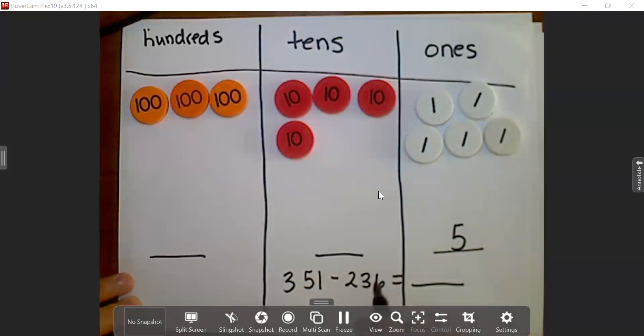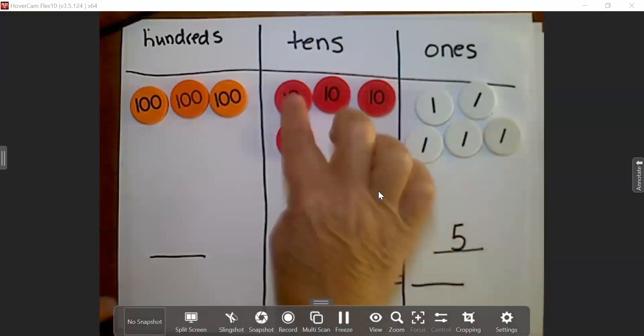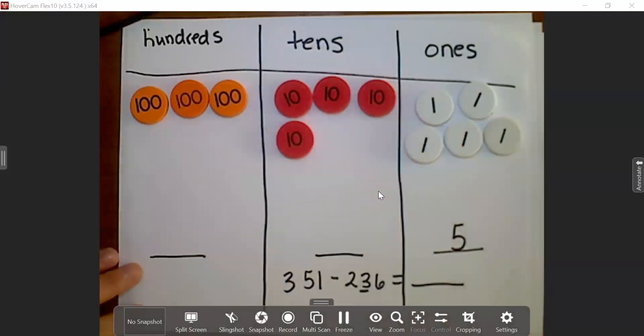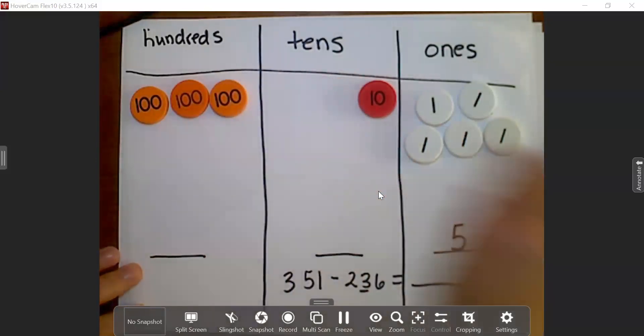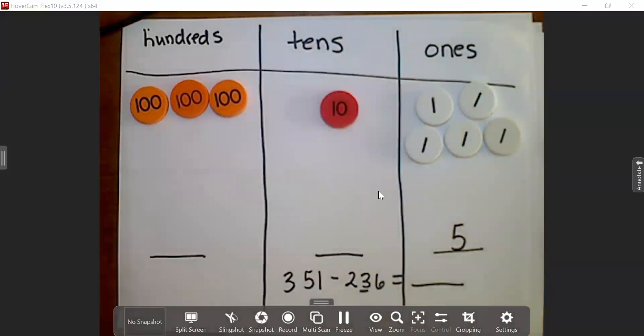Now I'm going to look at the 10s place. The 10s, I'm going to subtract 3 10s. Well, fortunately, I have three 10s that I can take away. So goodbye 10s. Now I have one 10 left. So I'm going to put that in my 10s place.